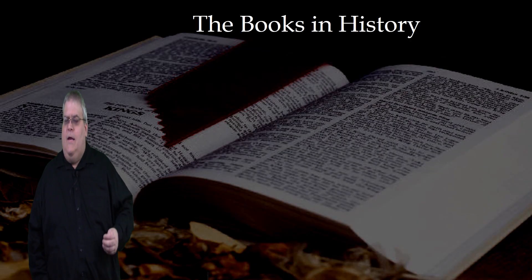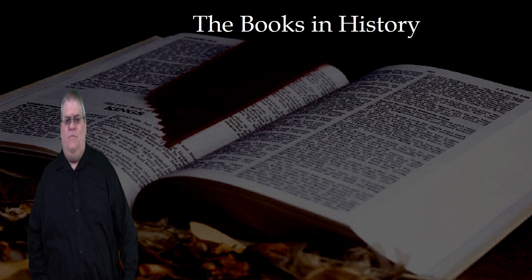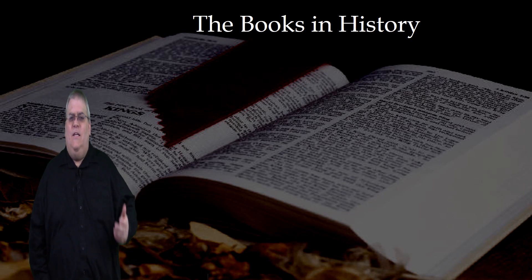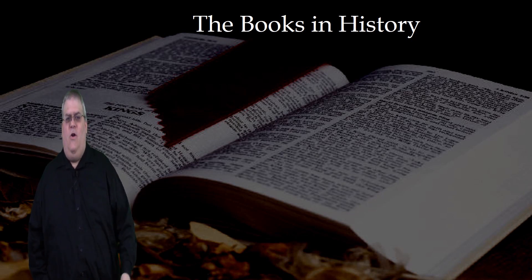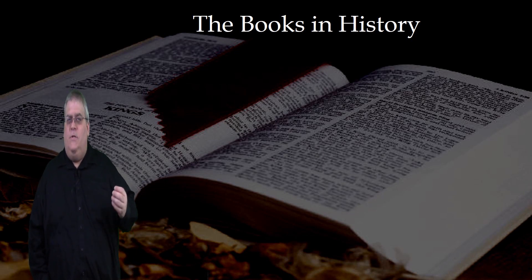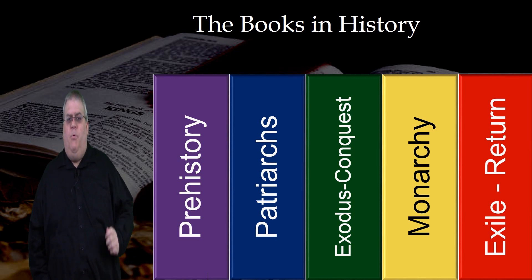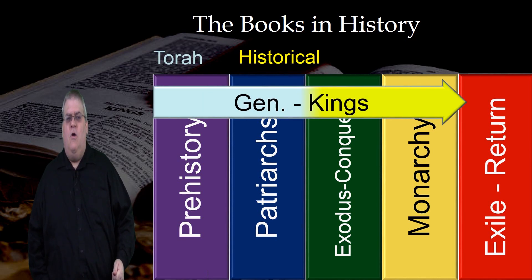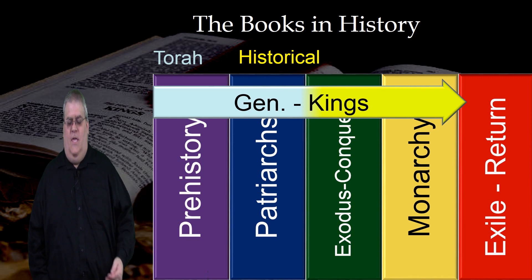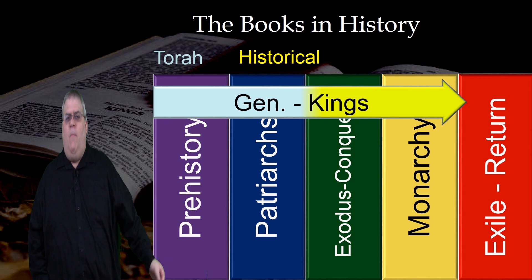Now, let's try to make a connection between the literature you've just learned and the history which you learned in the last section. Let's examine how these books are related to their history — the chronological organization of the books. The books of Genesis through 2 Kings are one continuous historical narrative that tells the history of epics 1 through 4, that is, the prehistory through the monarchy.